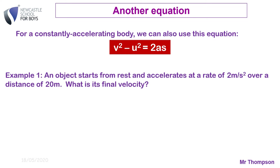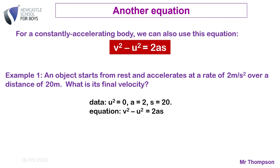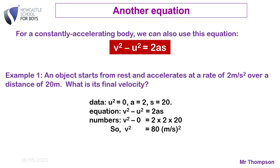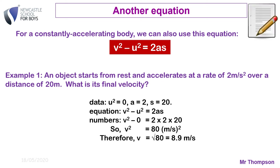Example one: an object starts from rest and accelerates at 2 m/s² over a distance of 20 metres. What is its final velocity? Since u = 0, the equation gives v² − 0 = 2 × 2 × 20, so v² = 80. Don't forget that's v squared — to get v, take the square root, which gives 8.9 m/s. Write that in your book as an example before attempting the assessment.